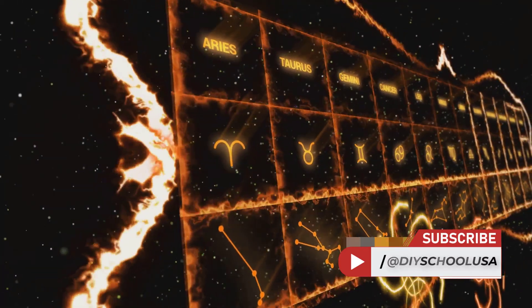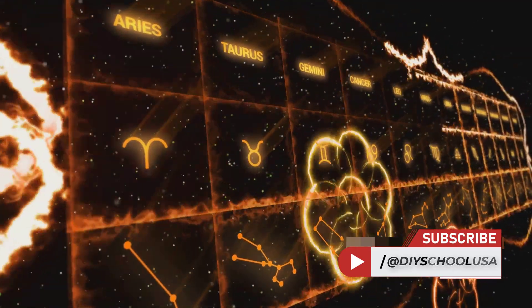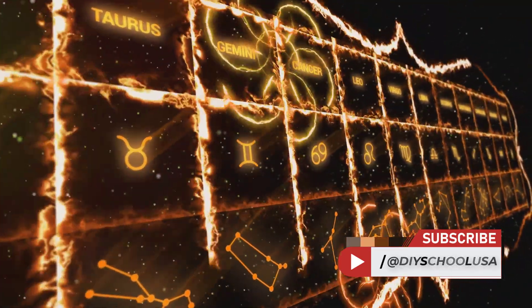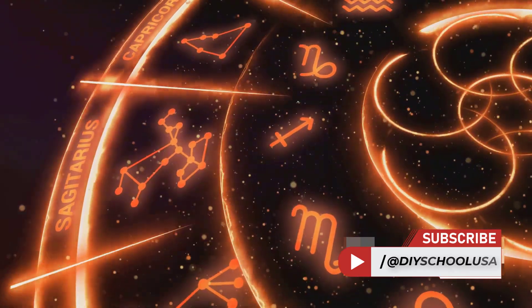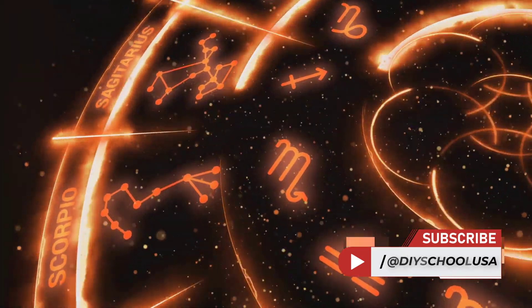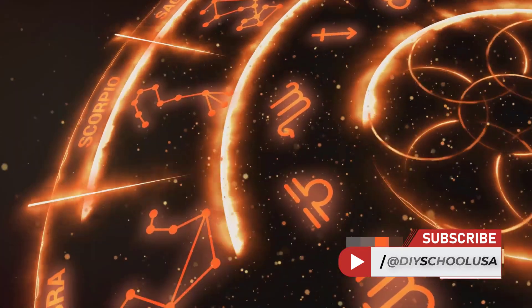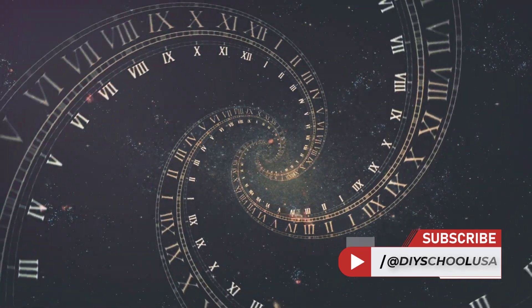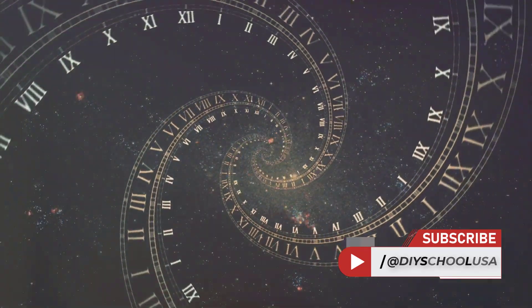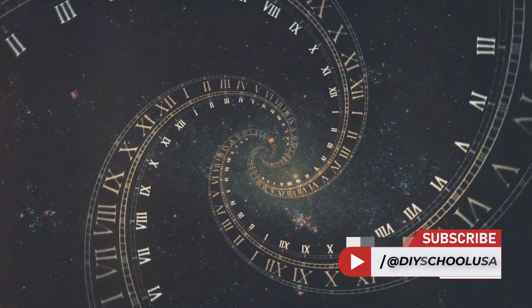Their mathematical prowess was built on a unique base-60 number system, which remarkably influenced their understanding of angles. This system, known as the sexagesimal system, allowed them to make precise calculations and measurements. For instance, they could split a circle into 360 degrees, a method that we still use today.